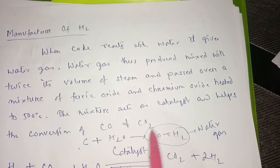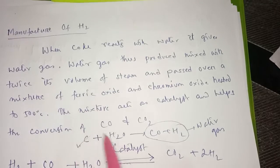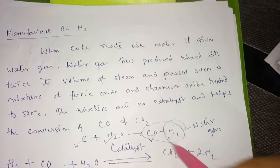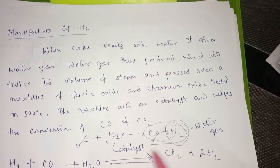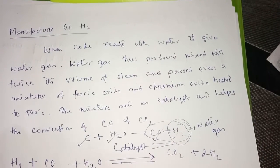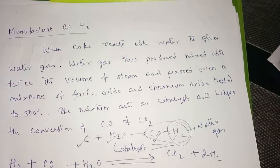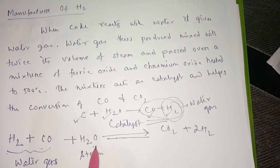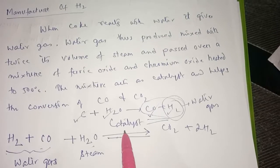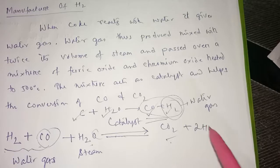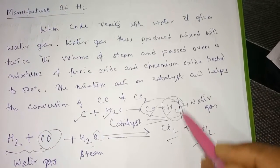Coke reacts with water forming carbon monoxide which is poisonous and hydrogen. This mixture of hydrogen and carbon monoxide when passed in presence of steam and catalyst forms carbon dioxide and hydrogen. More hydrogen is produced here.